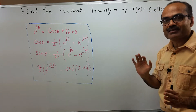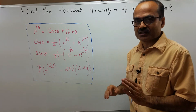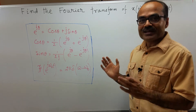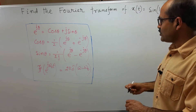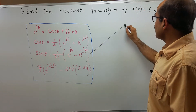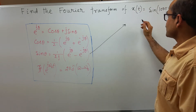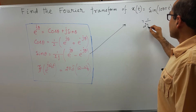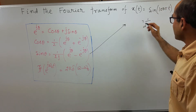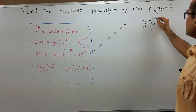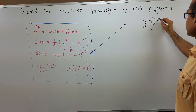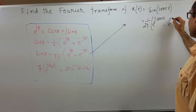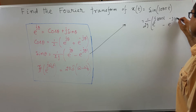sin(100πt) is a periodic function. As it is a periodic function, we can express it as a Fourier series expansion. We make use of this result to get the Fourier series expansion of this function. So, this is 1 over 2j times e to the power j·100πt minus e to the power minus j·100πt.